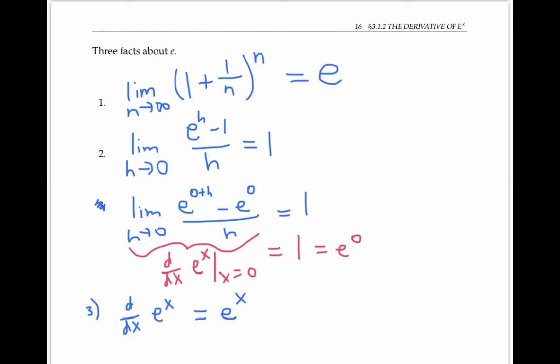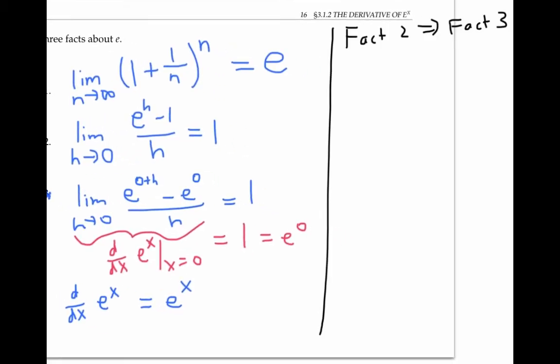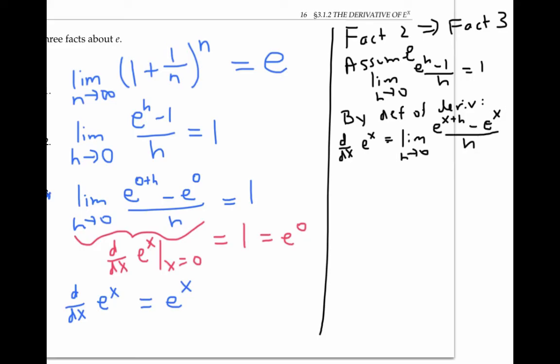So let's start out assuming fact 2 and try to prove fact 3 using the definition of derivative. By the definition of derivative, the derivative of e to the x is the limit as h goes to 0 of e to the x plus h minus e to the x over h.